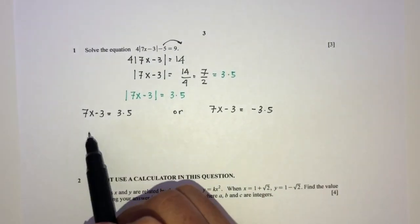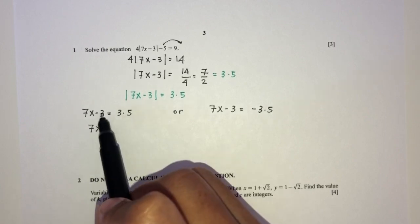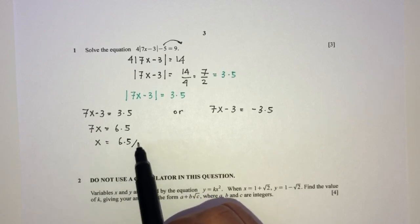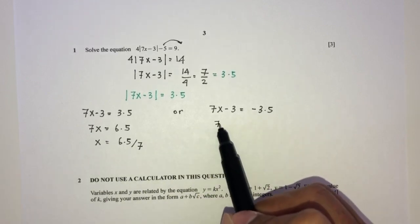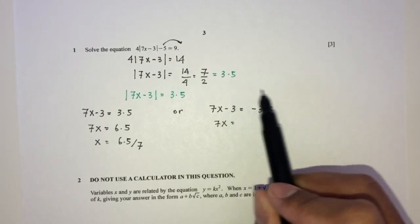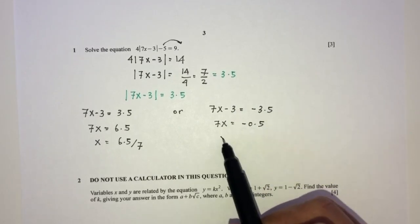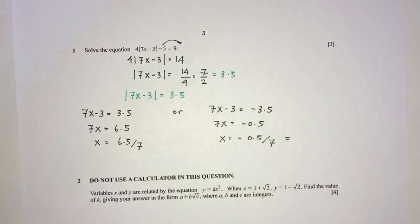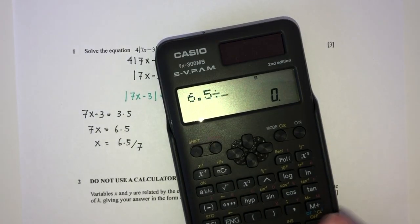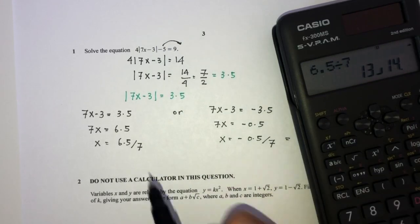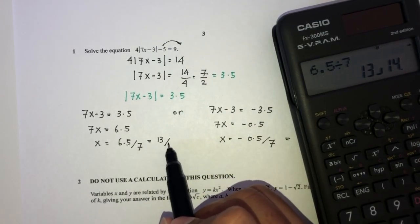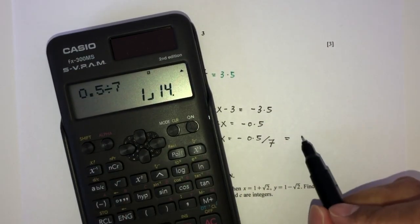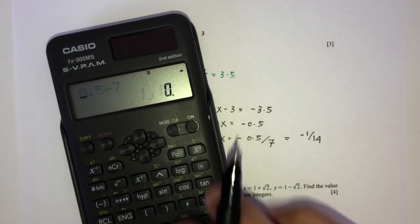Now we can solve for the value of x. So 7x will be 6.5, and x becomes 6.5 divided by 7. And here 7x becomes minus 3.5 plus 3, which is minus 0.5, and x becomes minus 0.5 divided by 7. You can simplify using your calculator. So 6.5 divided by 7 is 13 over 14, and this one is minus 1 over 14.